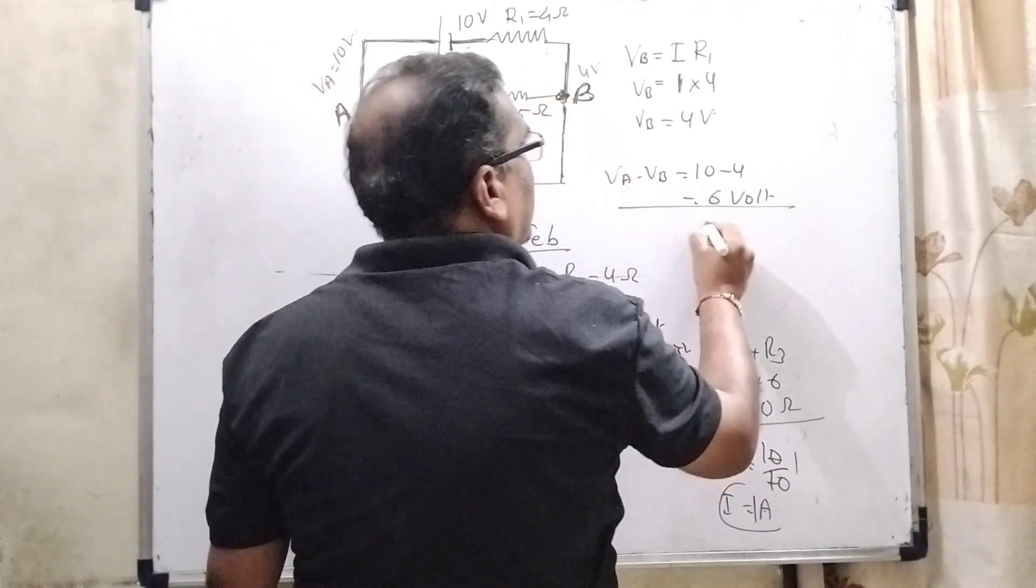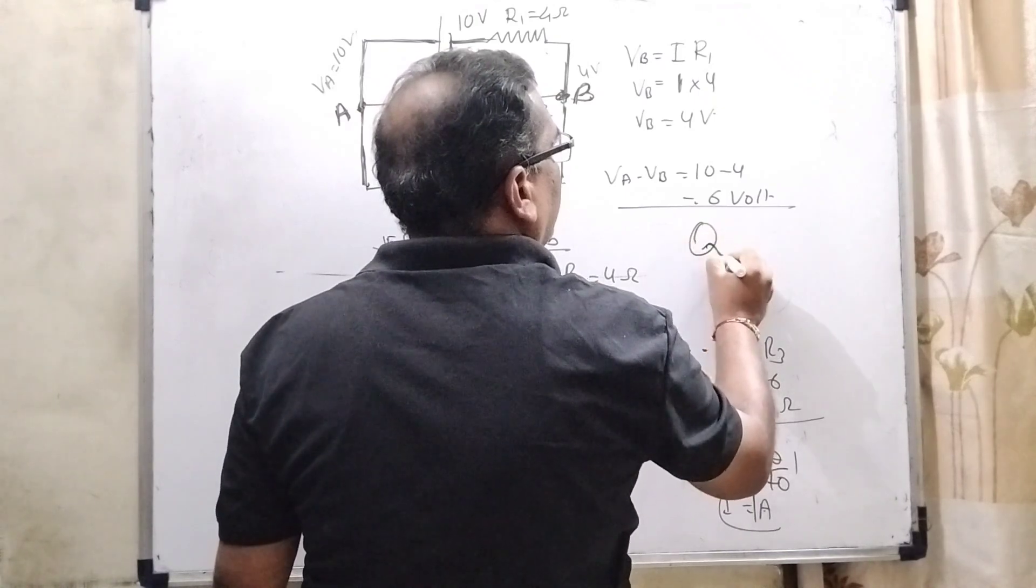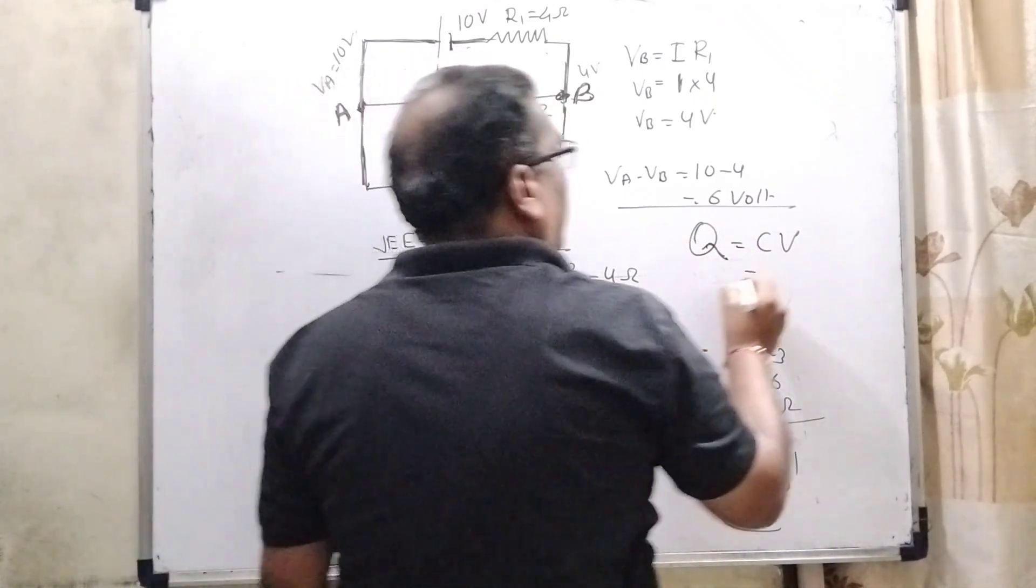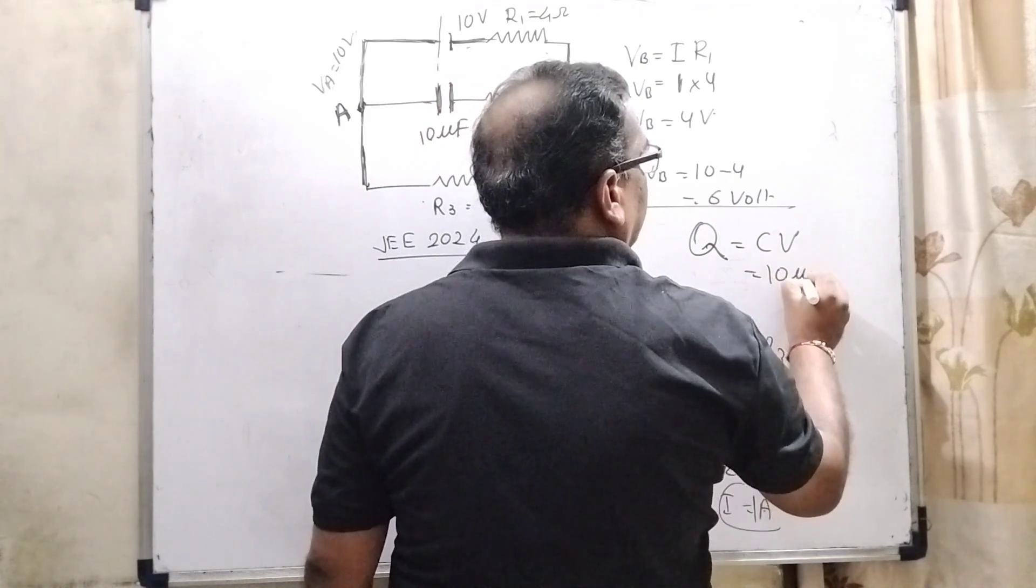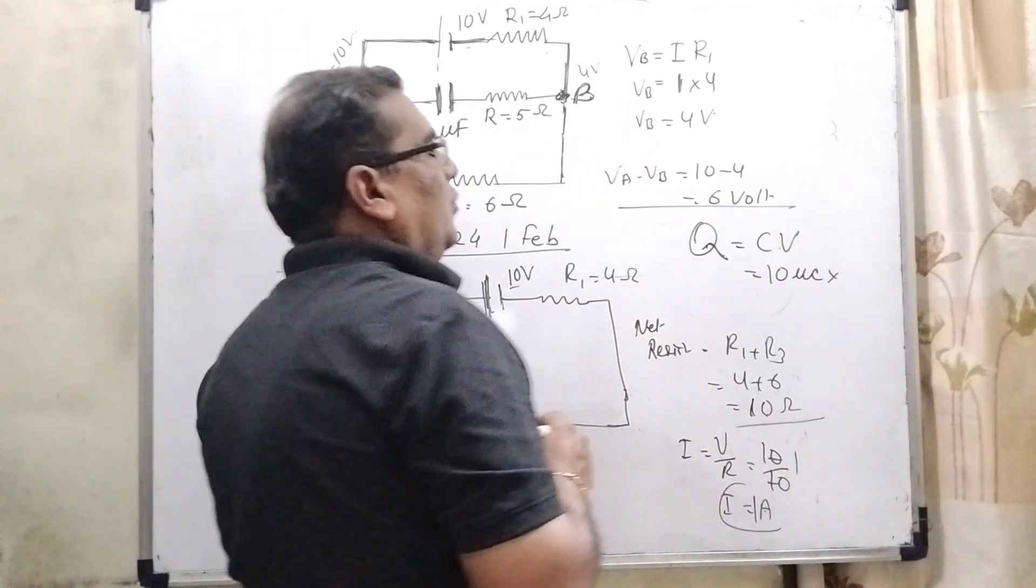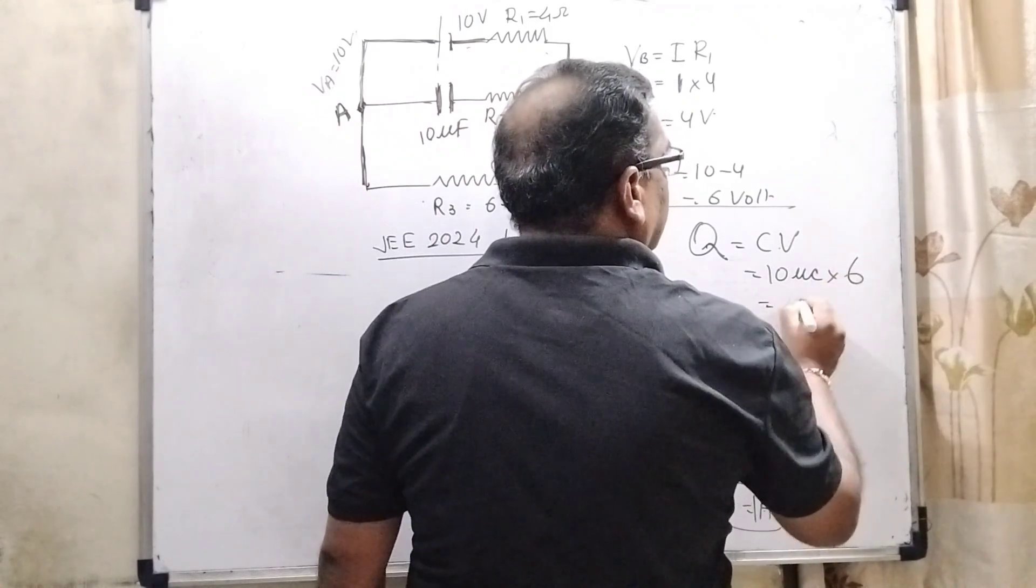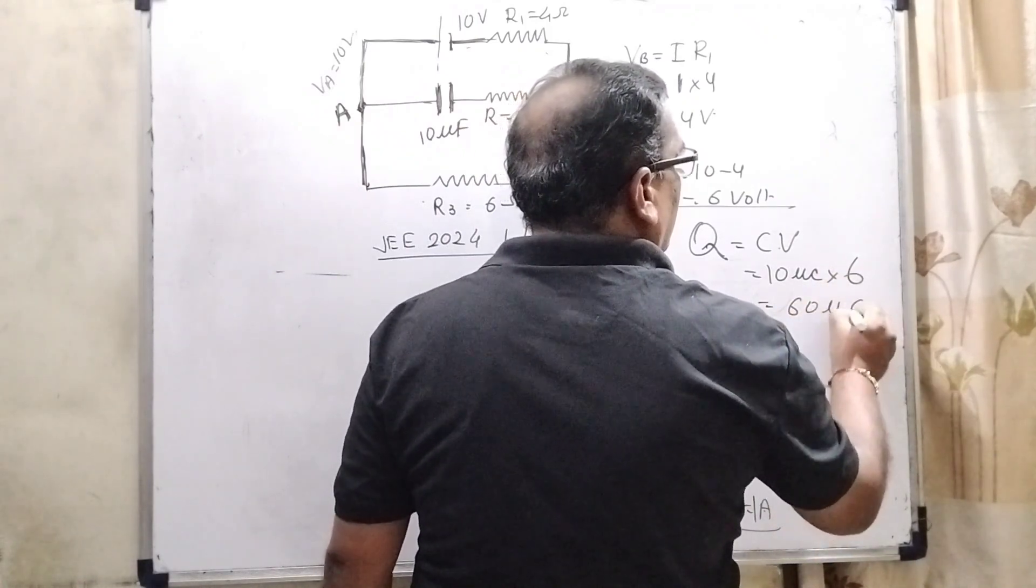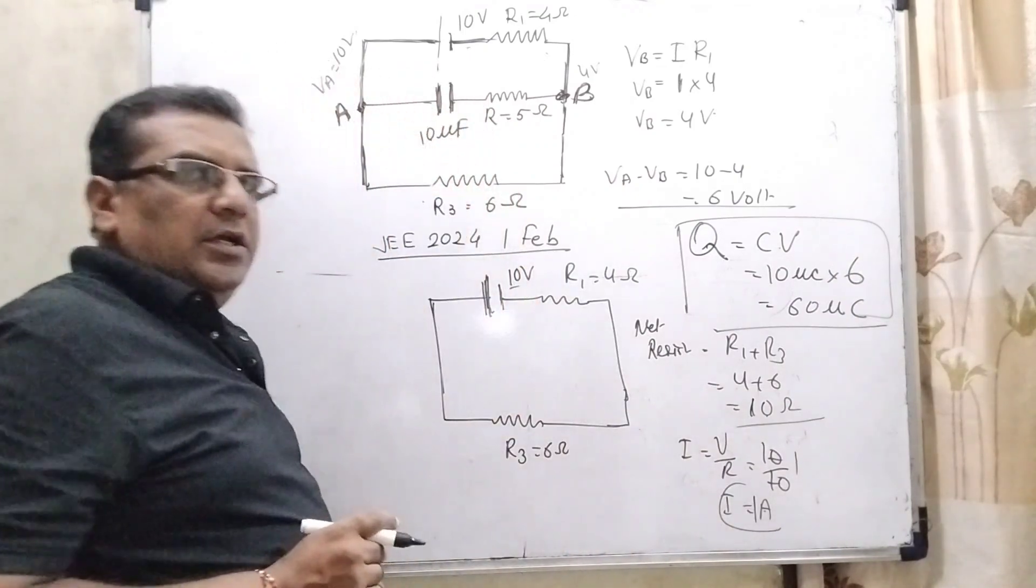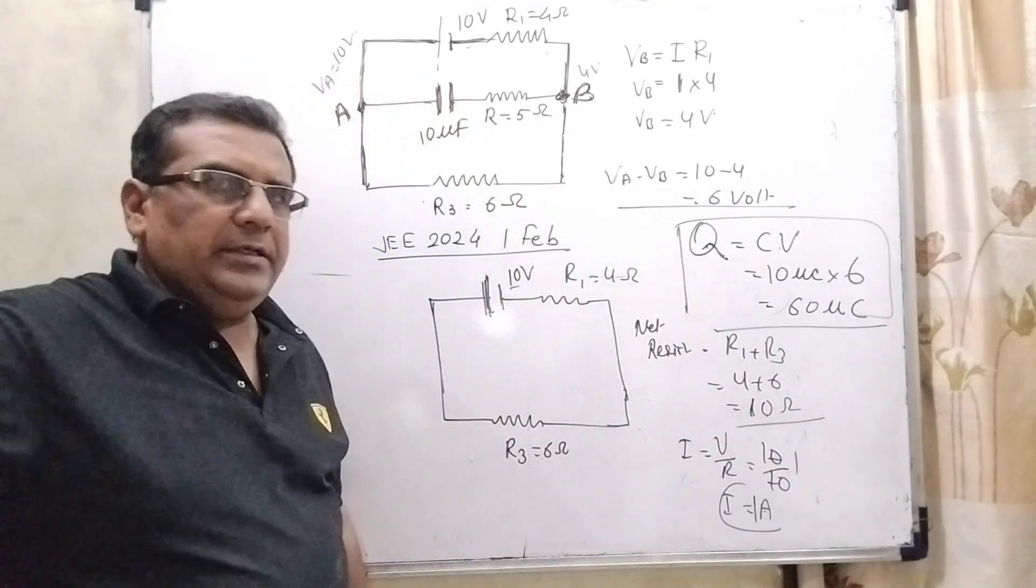As we have to calculate the charge, we know that the formula Q equal to C into V. What is capacitance given? That is 10 microfarad. And this is here 6 volt. So we get 60 micro coulomb charge of this capacitor. So this is the correct answer.